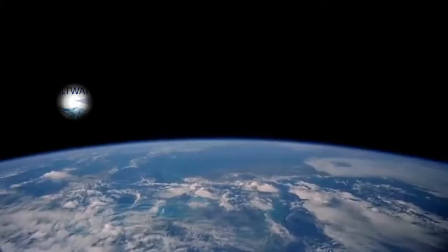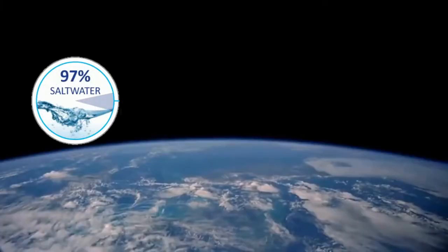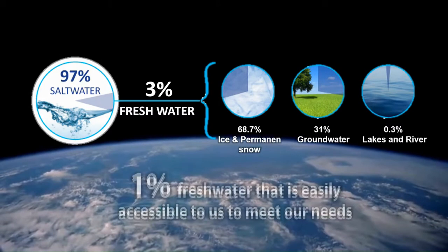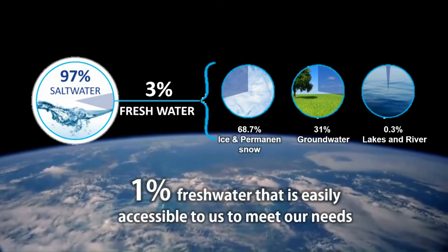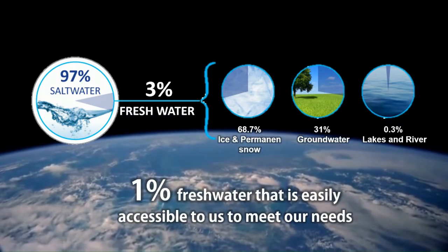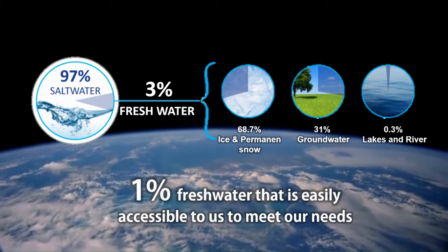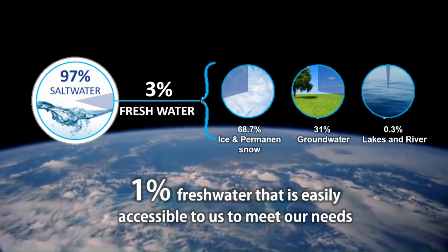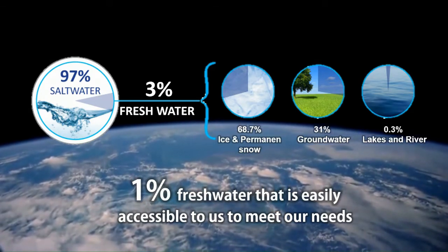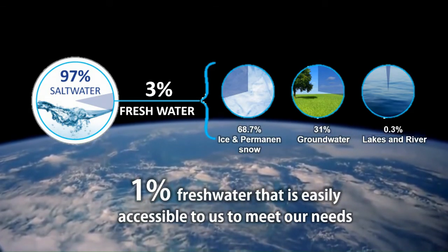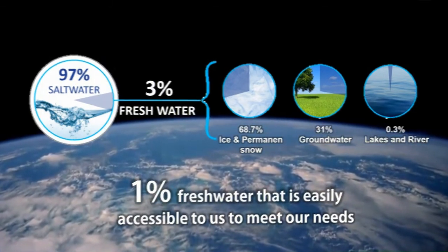Of all the water that exists on our planet, roughly 97% is saltwater, and less than 3% is freshwater. Less than 1% of Earth's water is freshwater that is easily accessible to us to meet our needs.